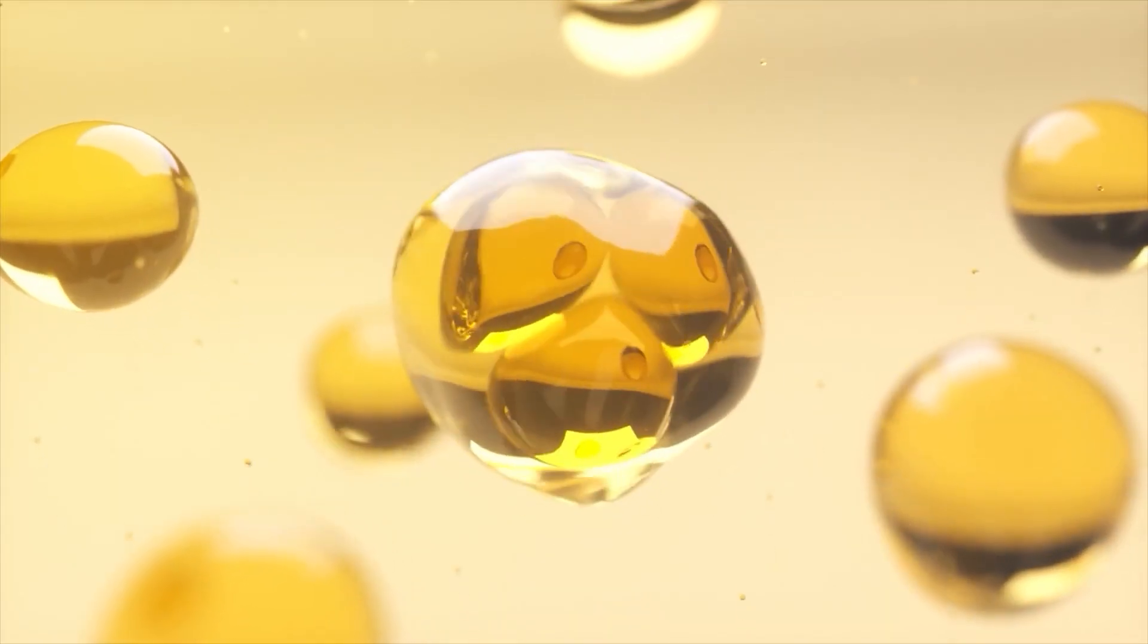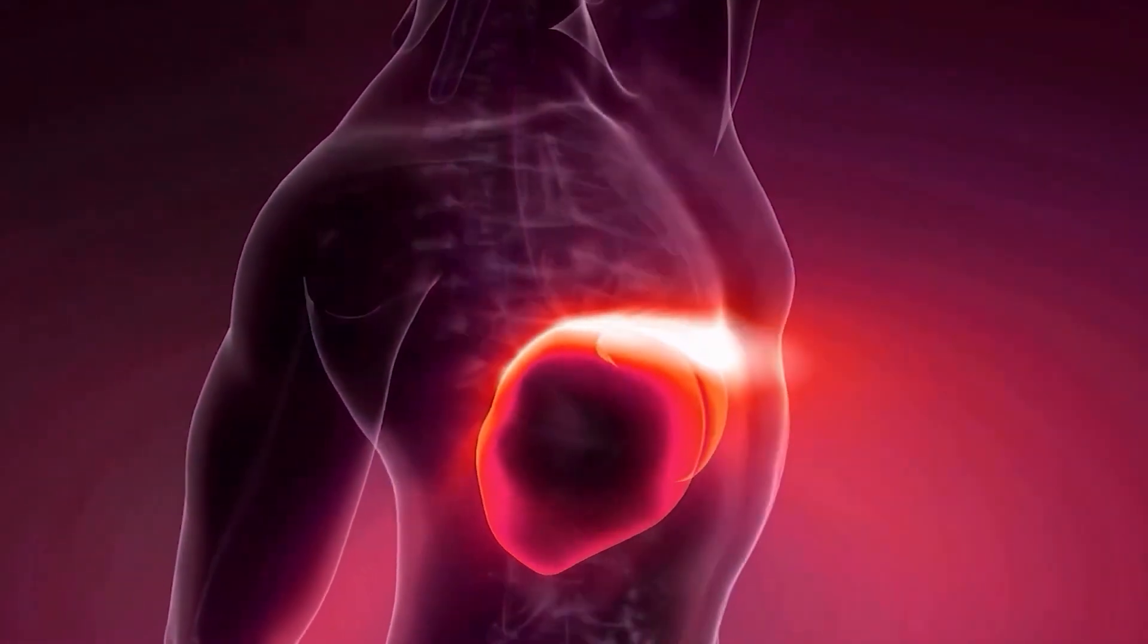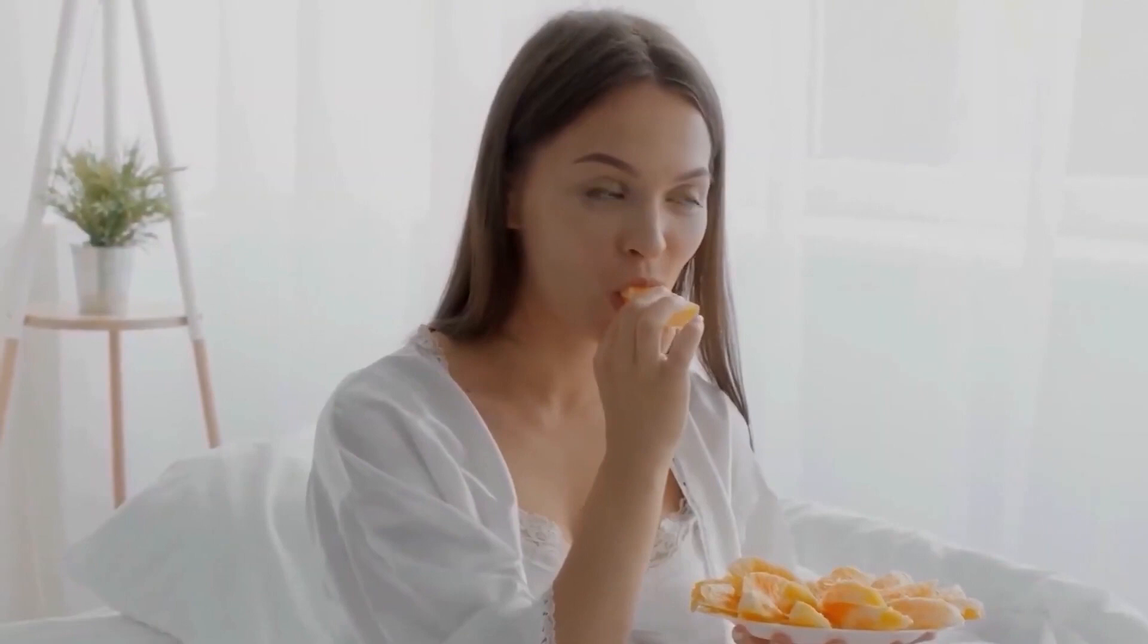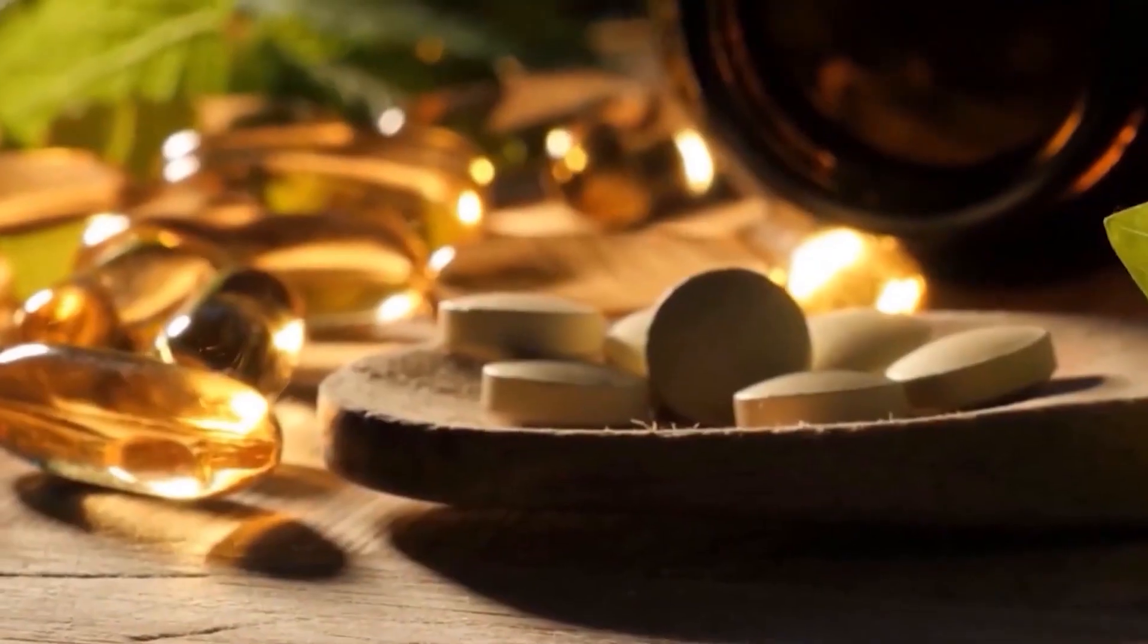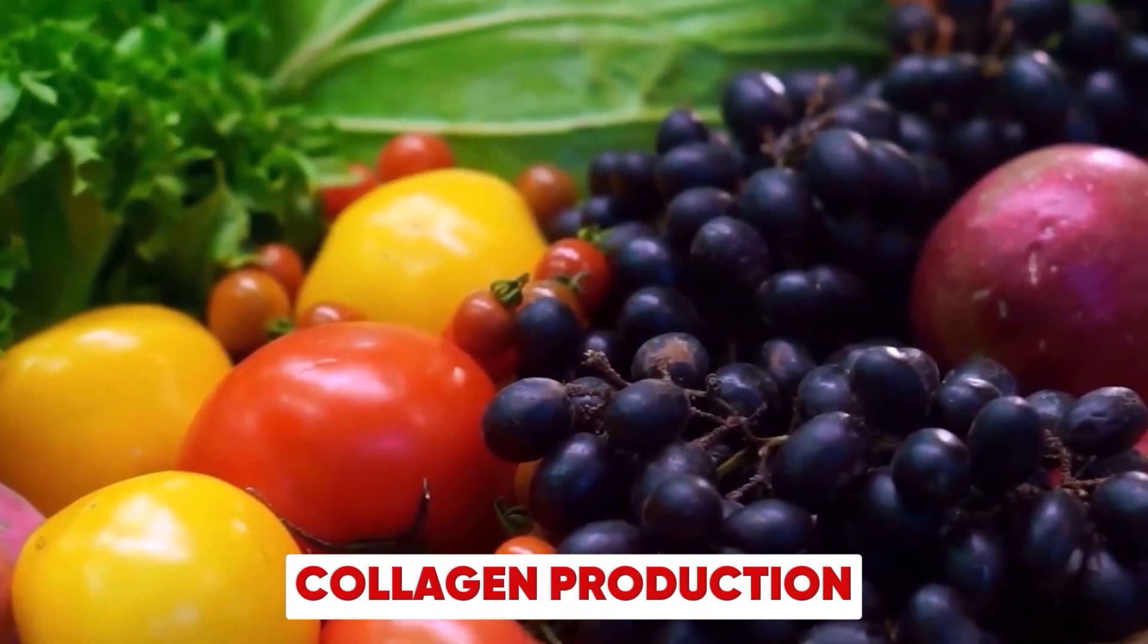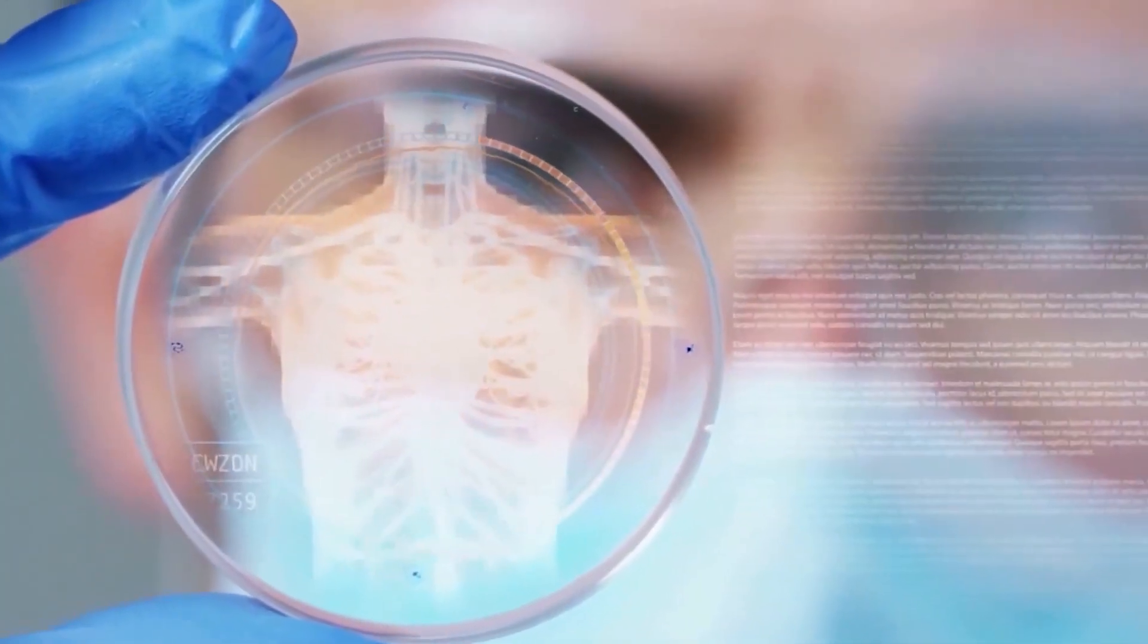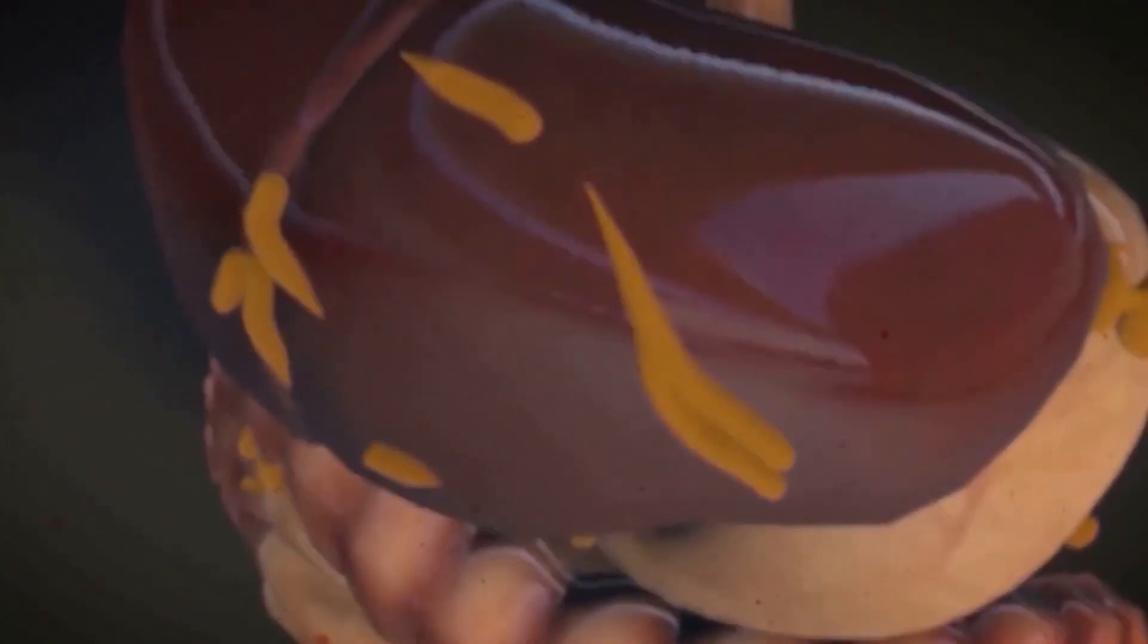Vitamin C. We all know vitamin C is great for boosting immunity, but did you know it also plays a crucial role in supporting liver health? Just like vitamin E, vitamin C is a powerful antioxidant that helps protect liver cells from damage caused by free radicals. But it does more than that, vitamin C is also essential for collagen production, which provides structure and strength to your liver tissue. This is especially important when the liver is trying to heal from damage.